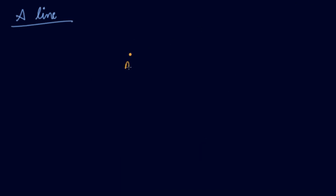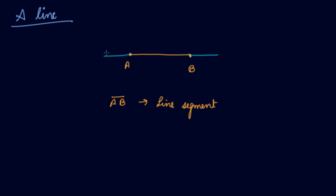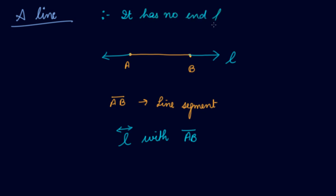Now we are given two points A and B, and I draw a line on it — it is known as line segment AB. But when I stretch the line from both A and B and it goes to infinity, then it is known as a line. I am giving it a name L. So L is a line, with AB as a line segment on it. A line has no end points, but there can be any number of line segments on a line.